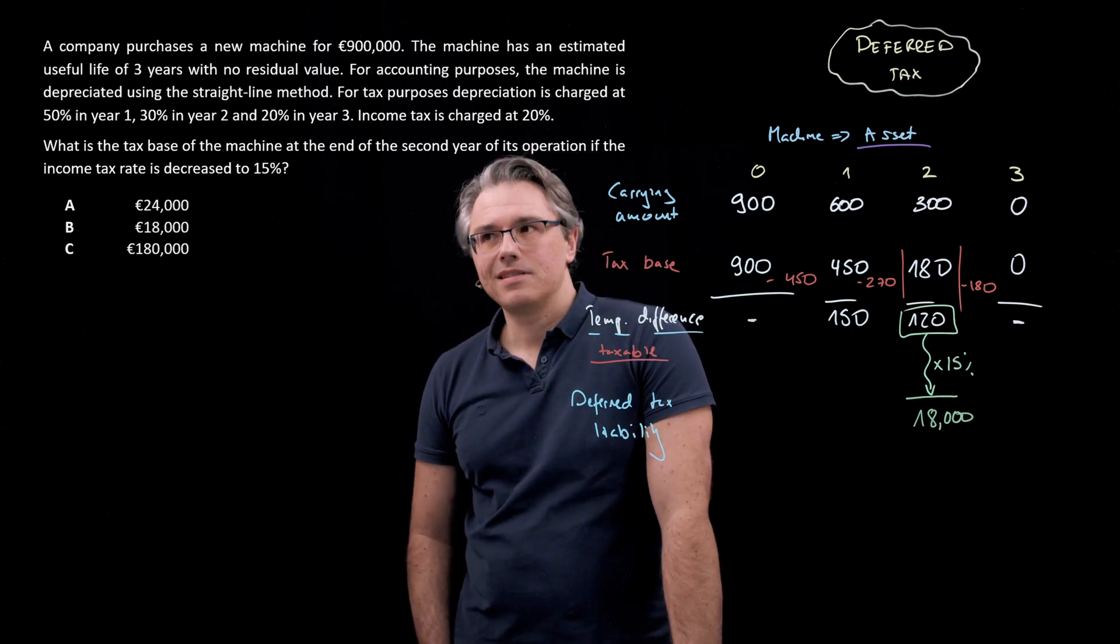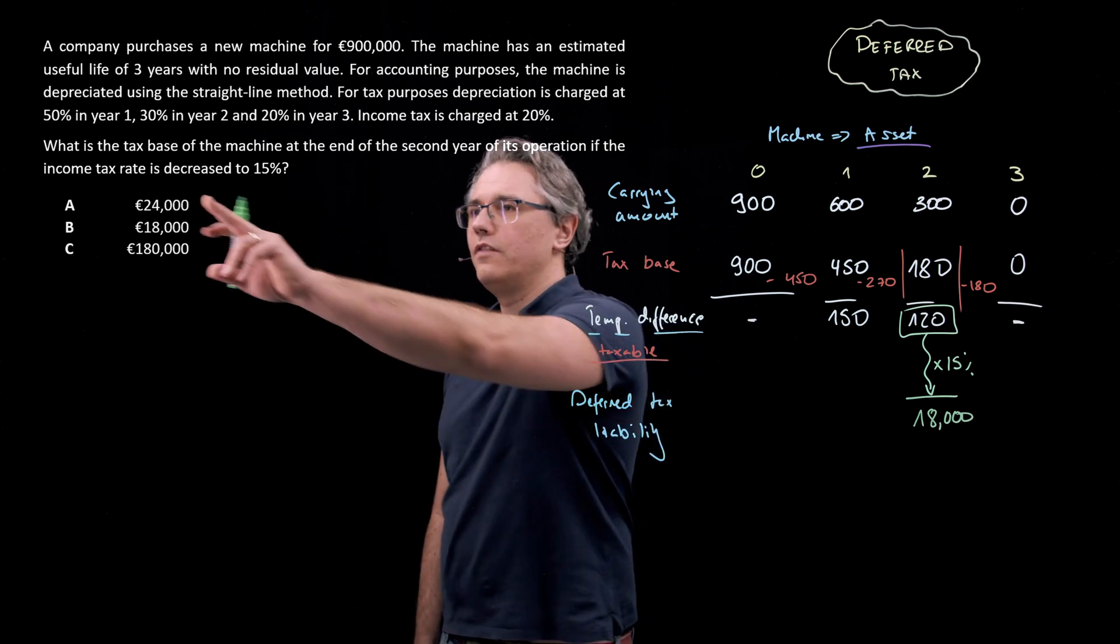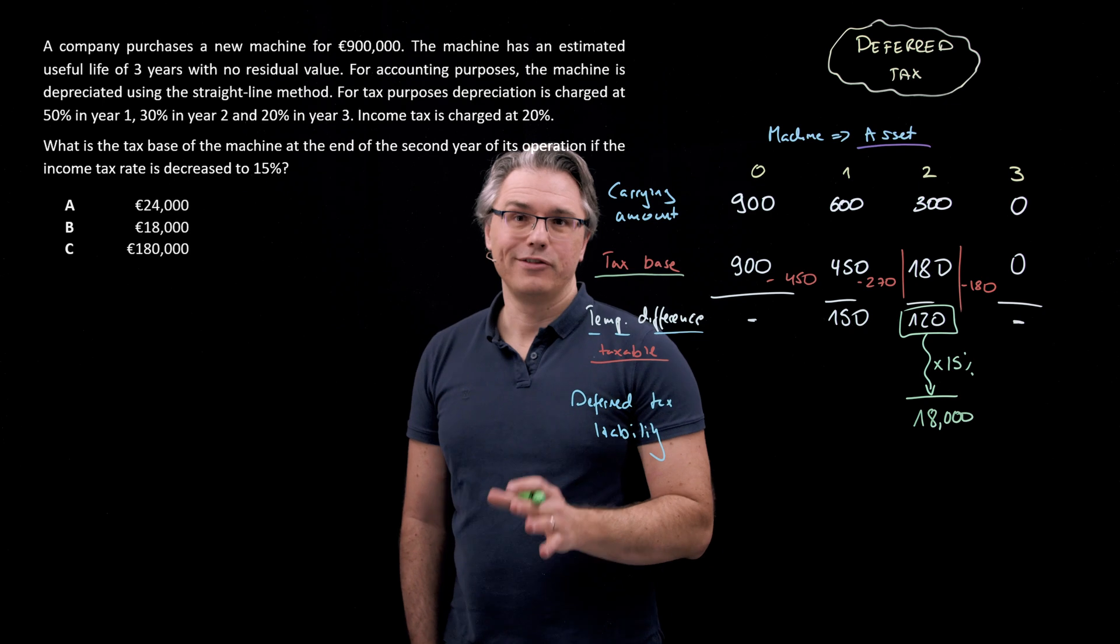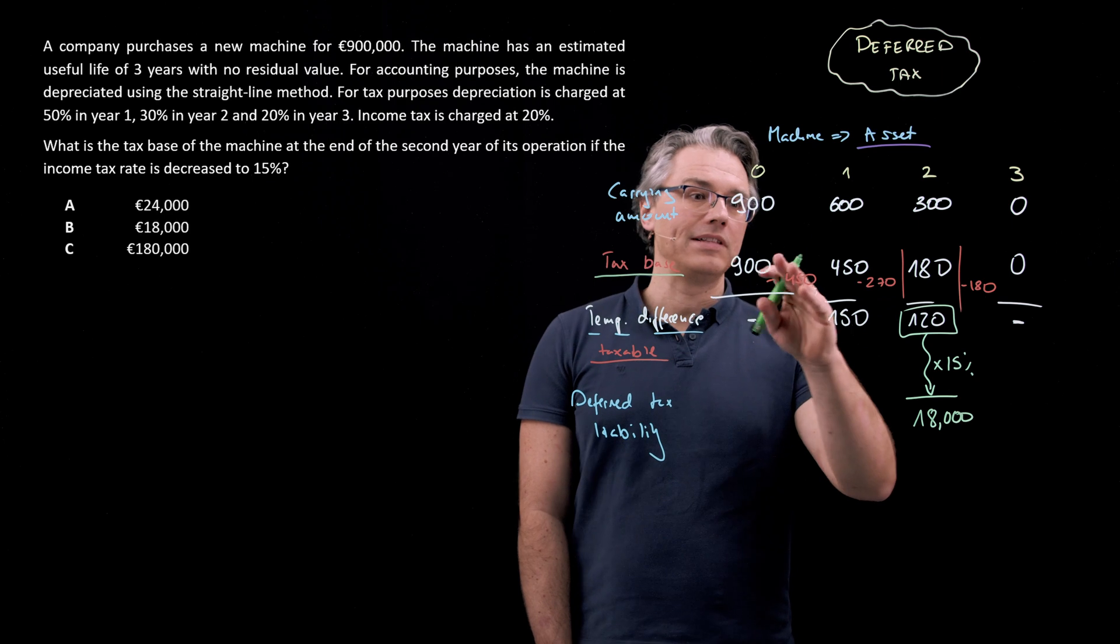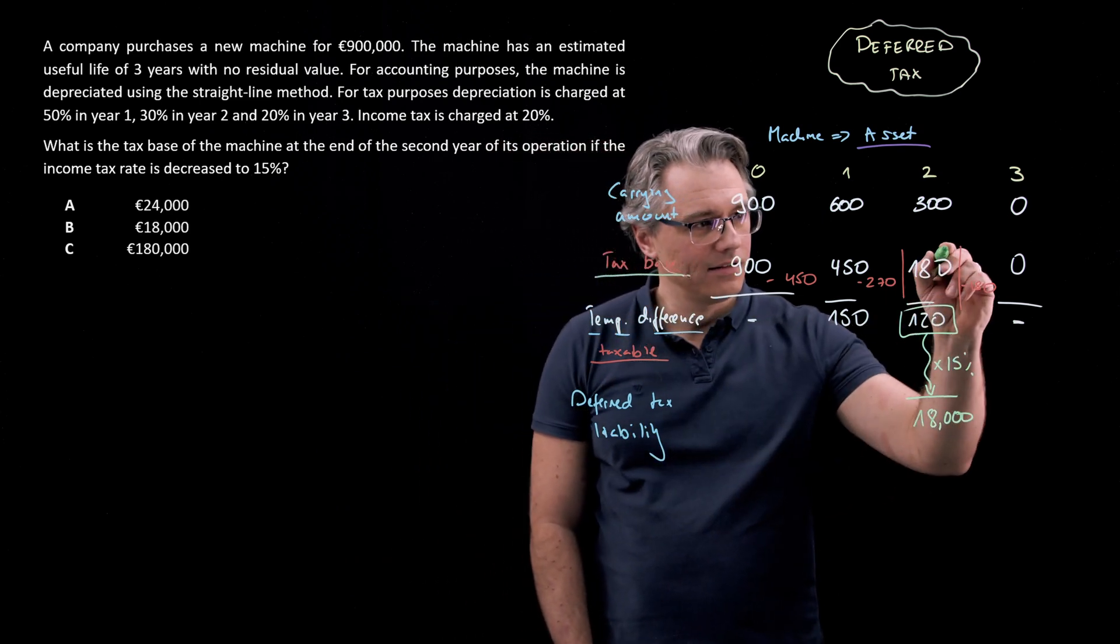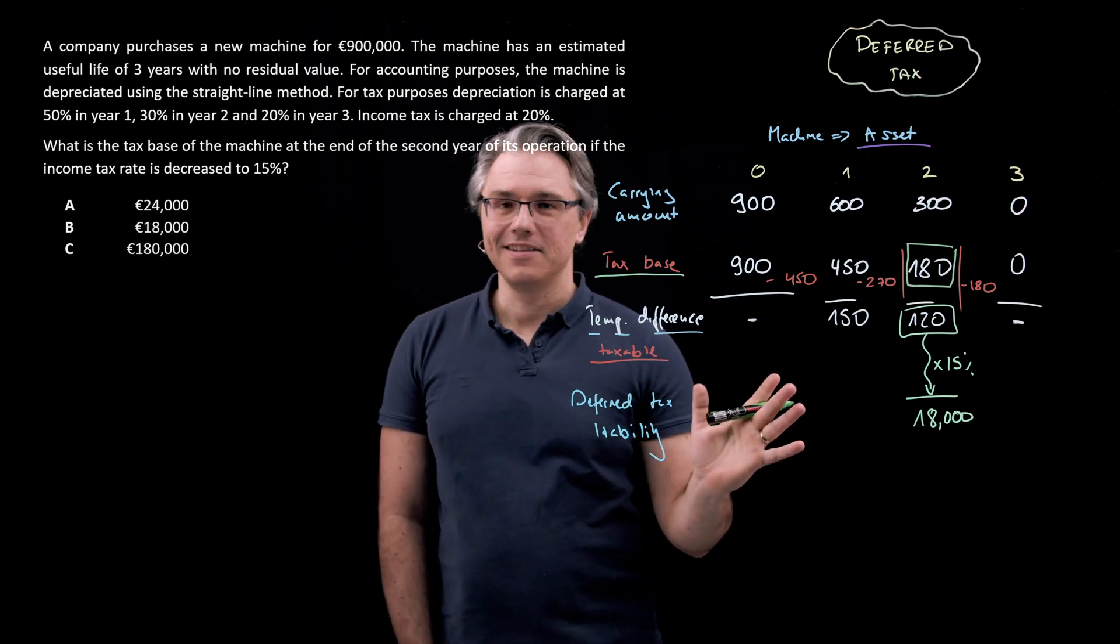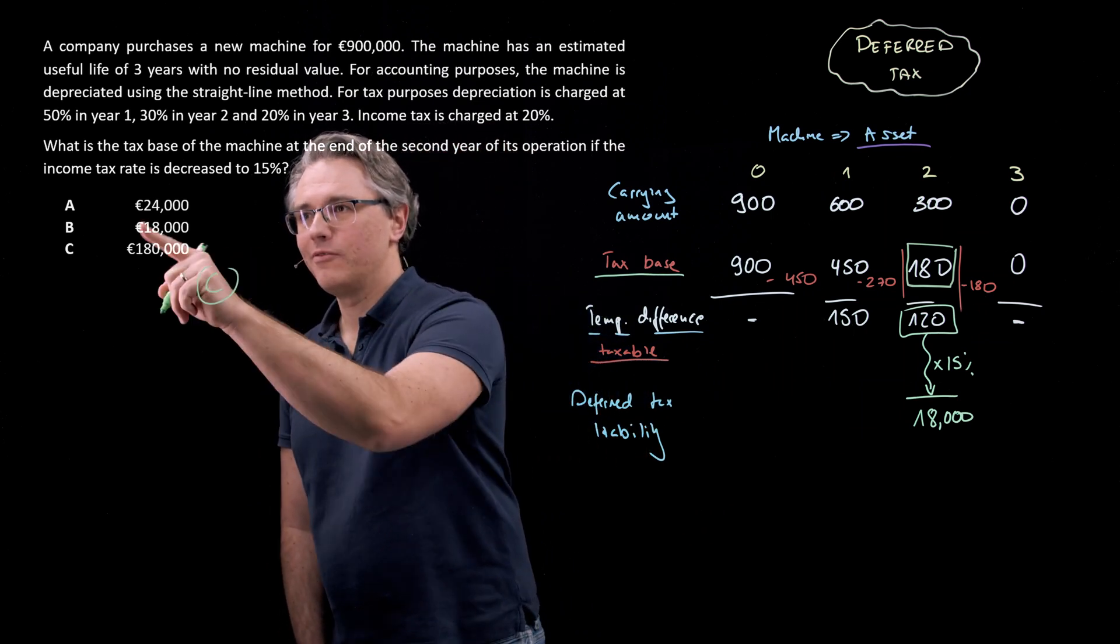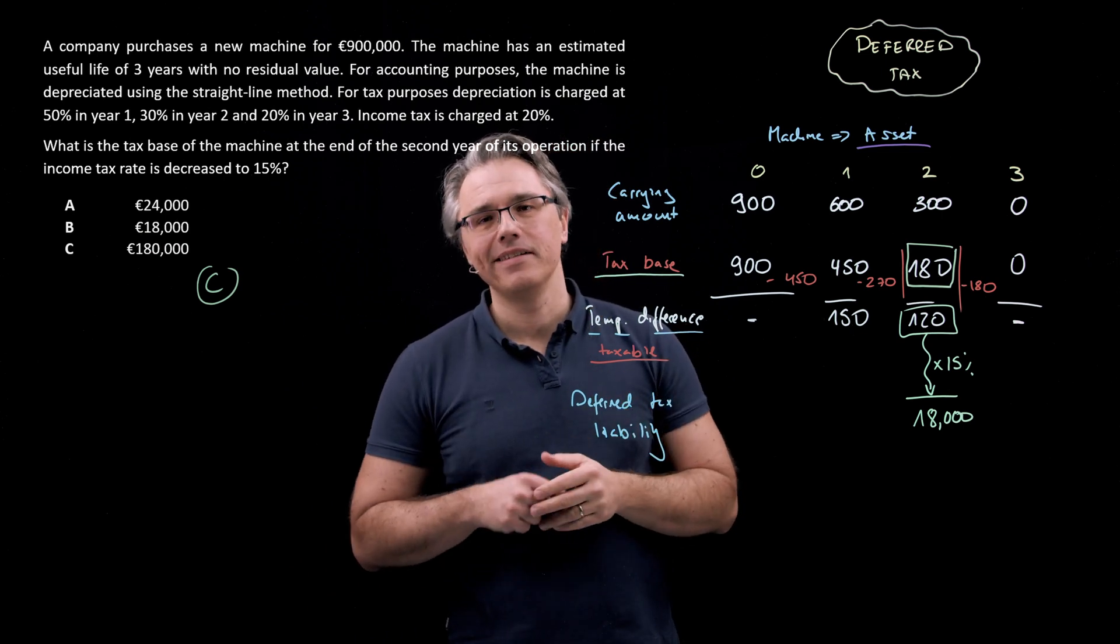However, this question does not ask for the deferred tax liability. Please note that the question asks for the tax base of the machine, and the tax base of the machine doesn't depend on the tax rate being used because it's a function of how for tax purposes that piece of equipment is depreciated. So identifying the correct answer means saying it's answer C, 180,000. The tax base is independent of the tax rate.